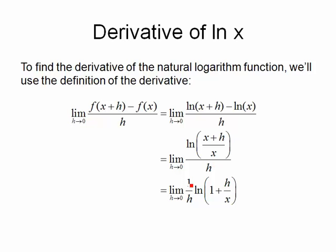So what I end up getting is limit h approaches 0, 1 over h, remember that was the divide by h that we had before, ln of 1 plus h over x. That's the result of dividing the top by x. So I had x over x which was 1 and h over x for the other term.